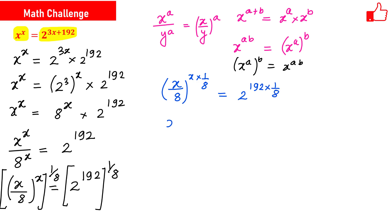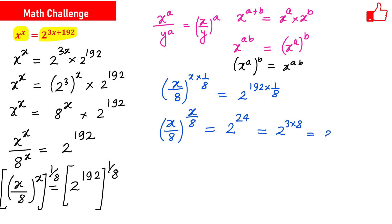This gives x over 8 raised to the power x over 8 on the left side. On the right side, 192 times 1 over 8 equals 24, so we have 2 raised to the power 24. This can be written as 2 raised to the power 3 times 8, which equals 8 raised to the power 8.